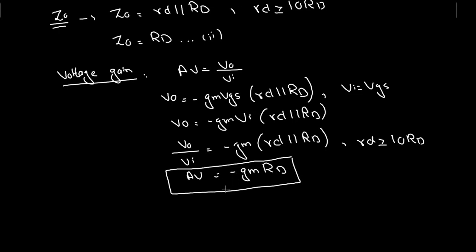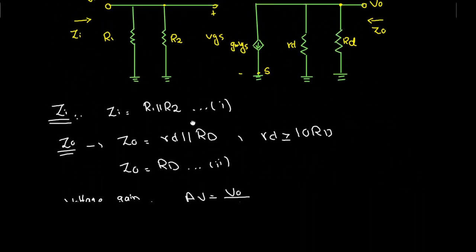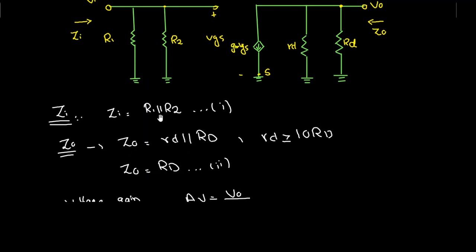The negative sign is because current flows from drain to source, from the positive to the negative terminal, giving a 180-degree phase shift, since this is the common source configuration. This voltage gain equation is the same for the common source fixed bias and self-bias configurations, and so is the output impedance equation. The only difference is in the input impedance — for fixed bias and self-bias the input impedance was equal to Rg, but now for the voltage divider configuration the input impedance is equal to the parallel combination of R1 and R2. Thank you.